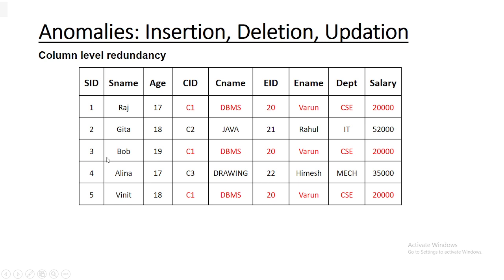Insertion, deletion, and updation anomalies are special occasions where they create a problem for such operations. These anomalies represent special occasions — it's not a normal operation. Starting with the insertion anomaly: if we have data in our table and want to add one student, we can simply add it — s_id, name, age, c_id, c_name, e_id — that's a normal situation and we can add it very easily.